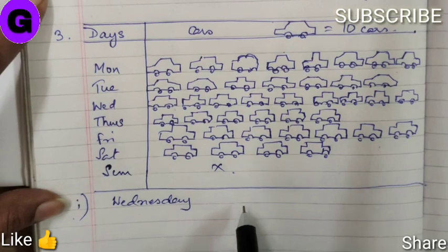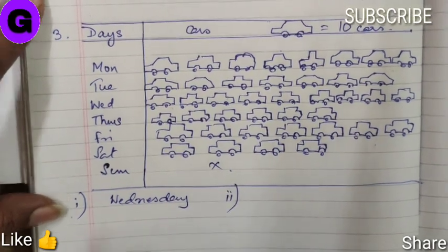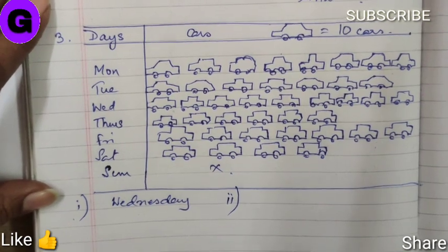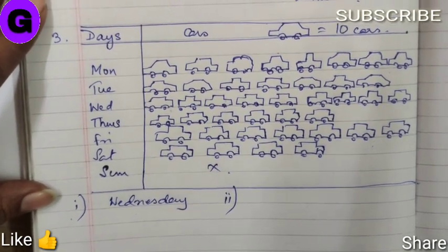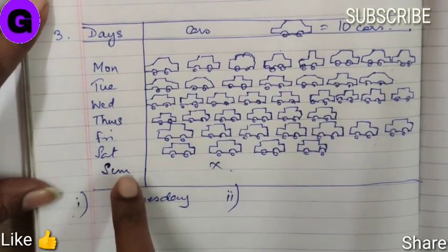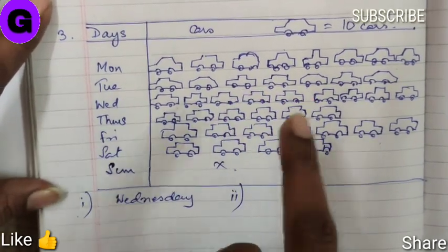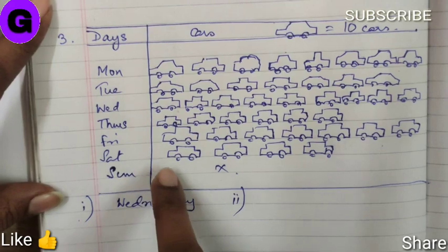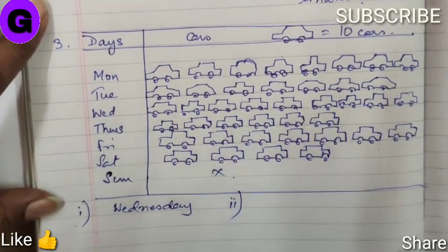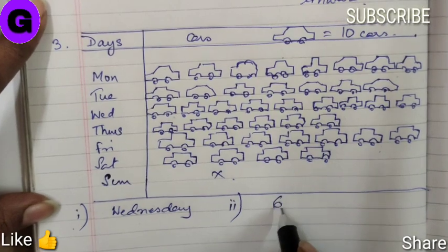Question 2: How many pictures of cars will represent the number of cars sold on Thursday? Thursday had 60 cars total, and the representation is 6 car symbols. So the answer is 6.